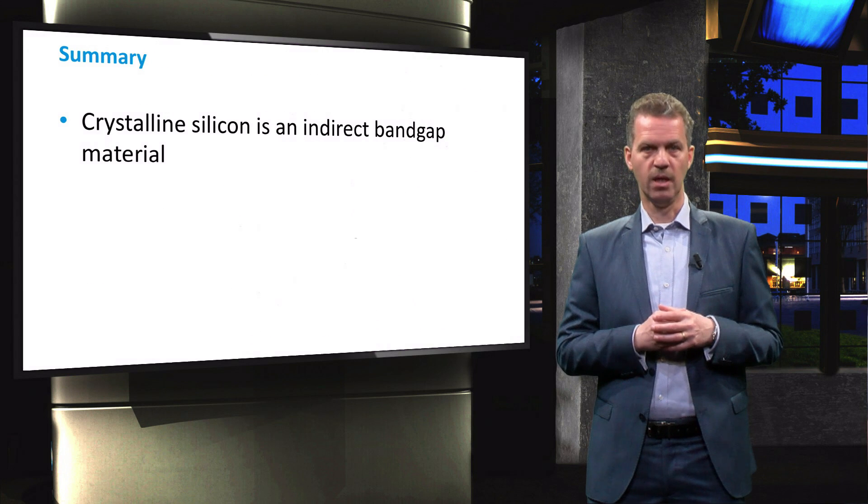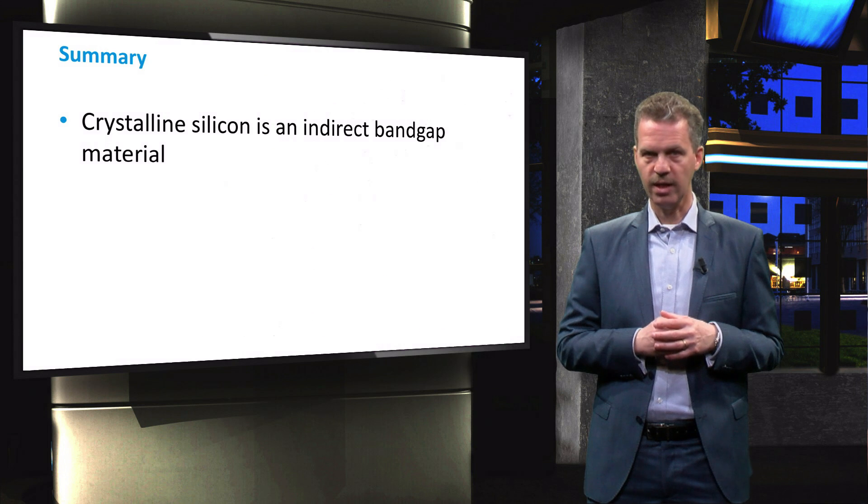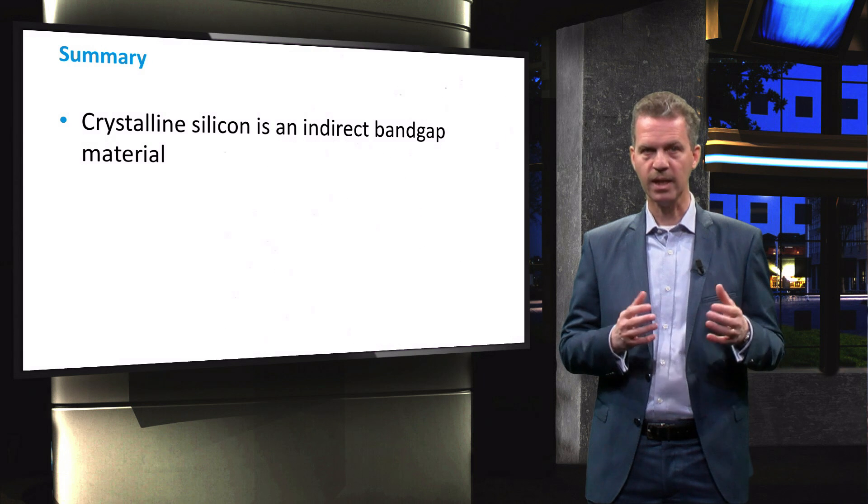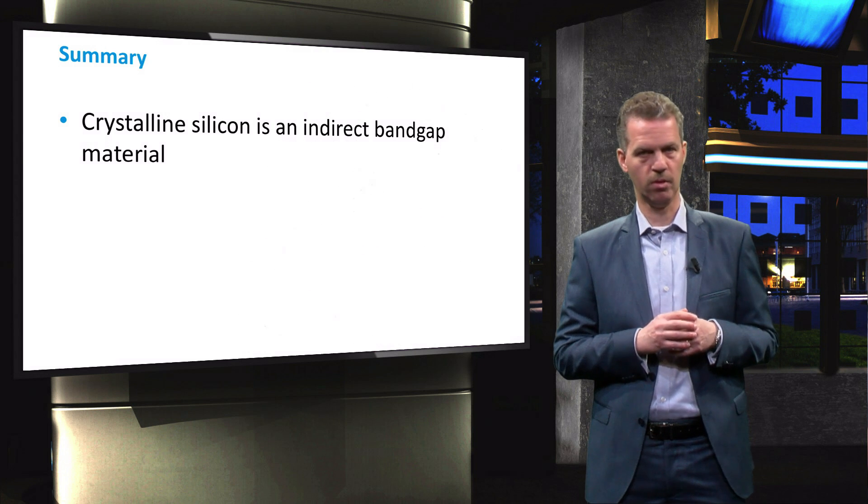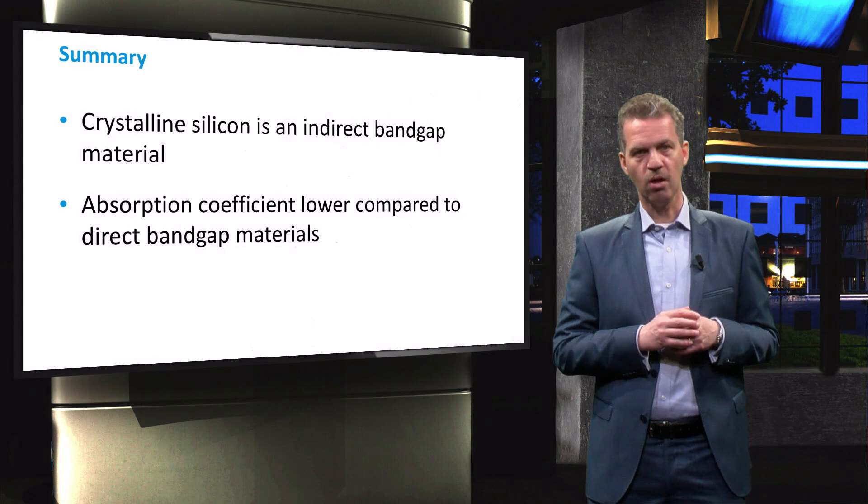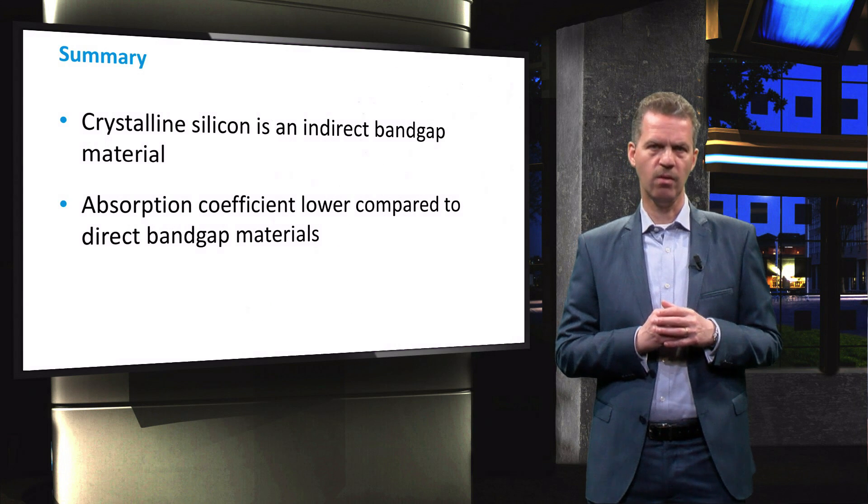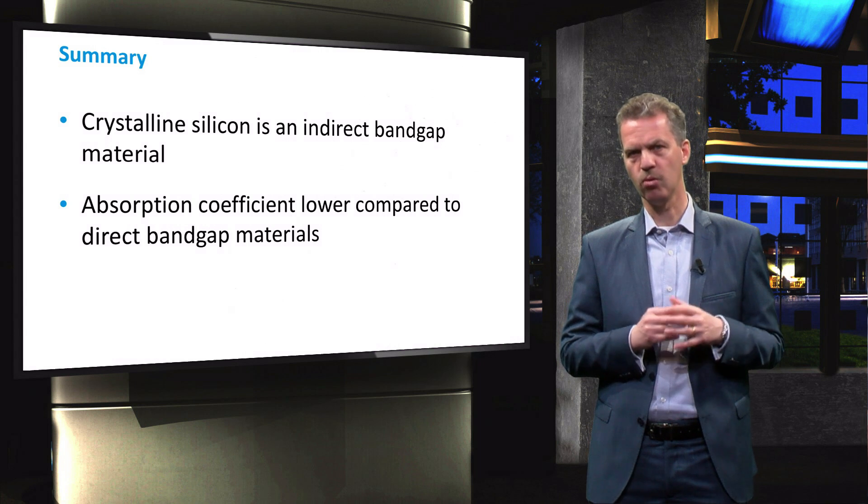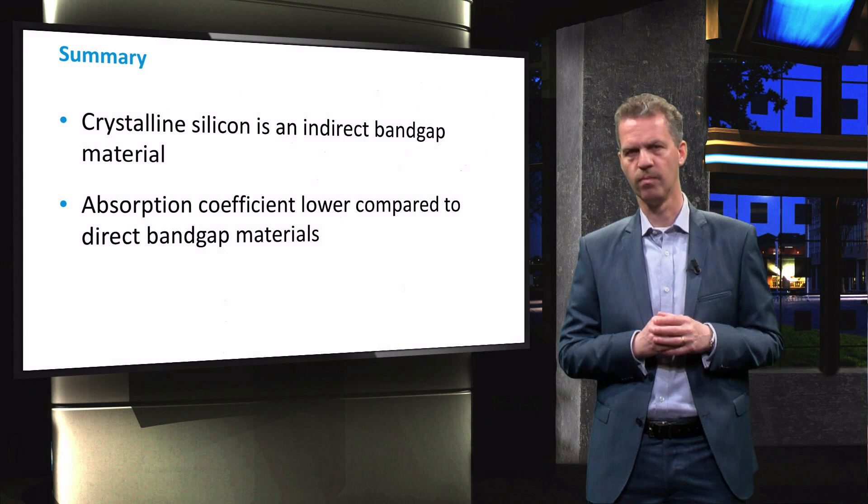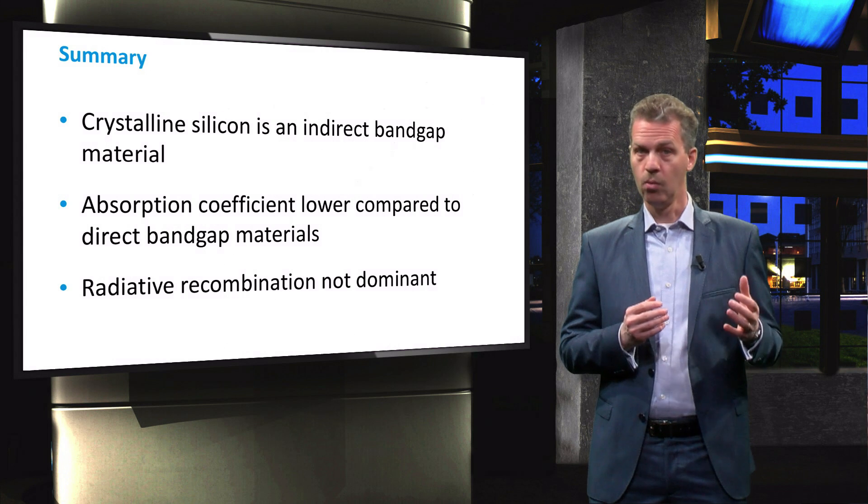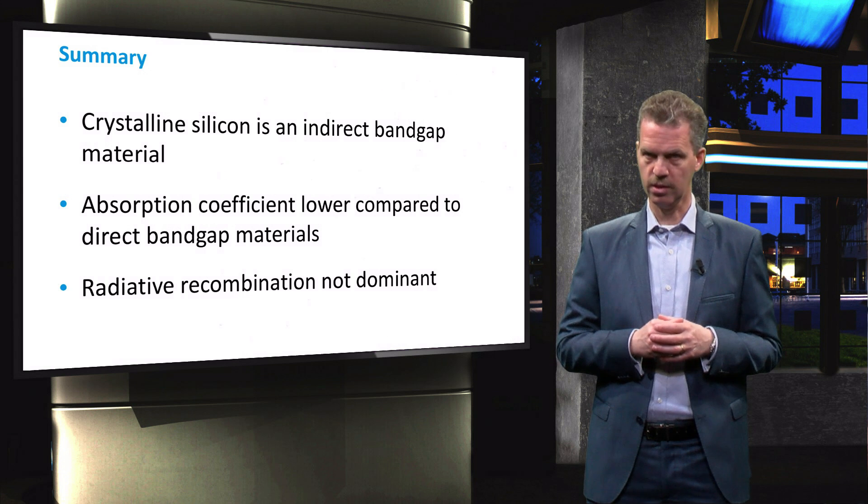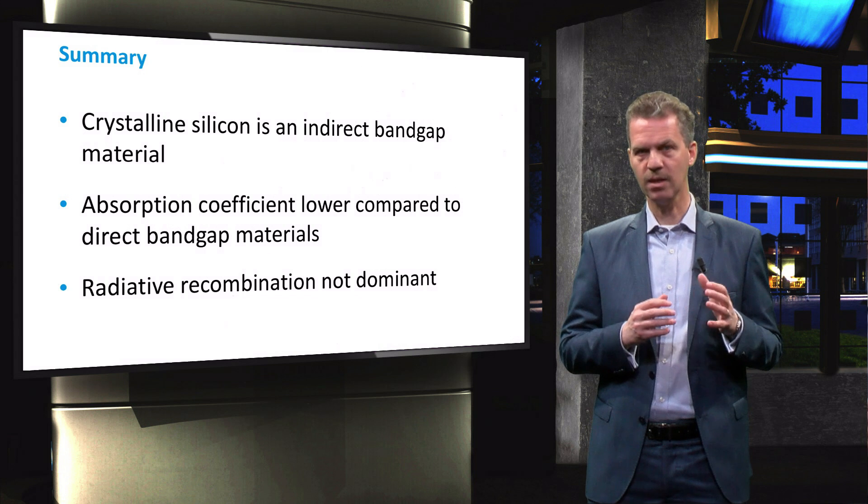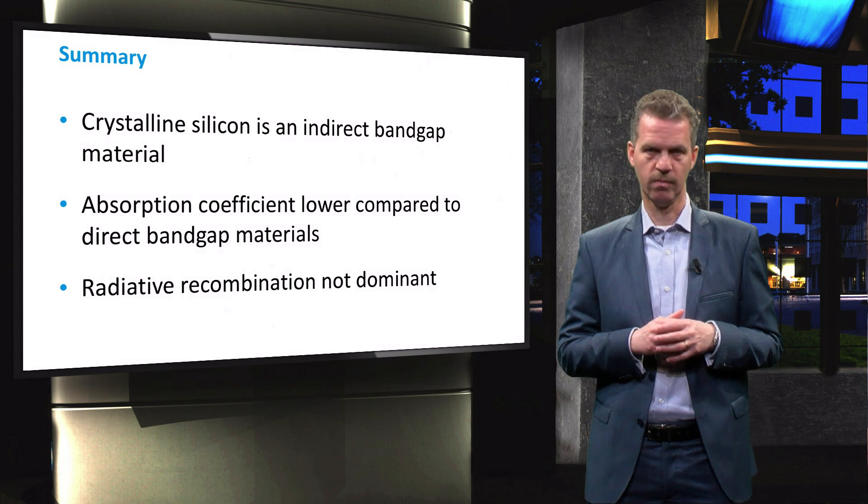To summarize this video, we have discussed that the lattice orientation of crystalline silicon has an effect on the energy dispersion diagram, making silicon an indirect band gap material. The absorption coefficient is therefore much lower than of direct band gap materials such that a thicker layer of material is required to absorb a large fraction of the incident light. On the other hand, radiative recombination can be neglected in crystalline silicon as a phonon is required to conserve crystal momentum, making this recombination mechanism less likely.